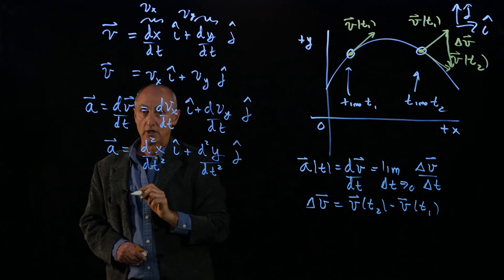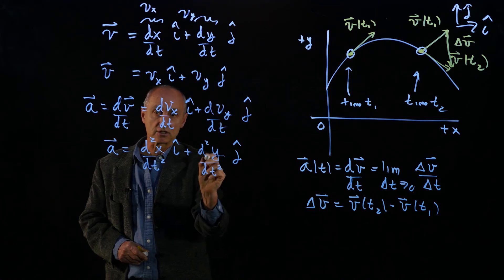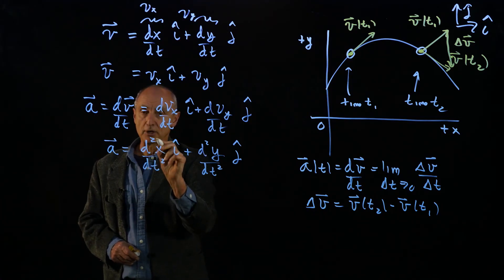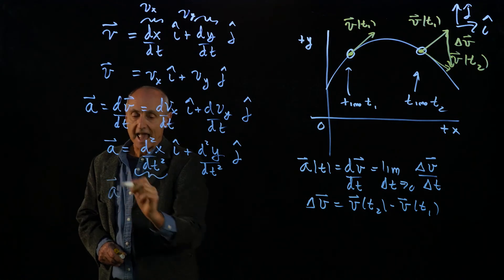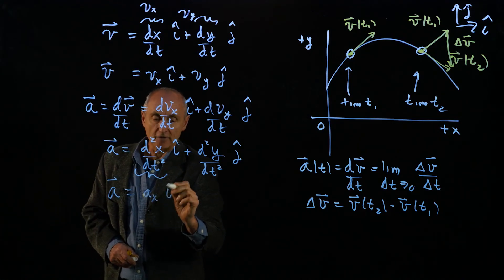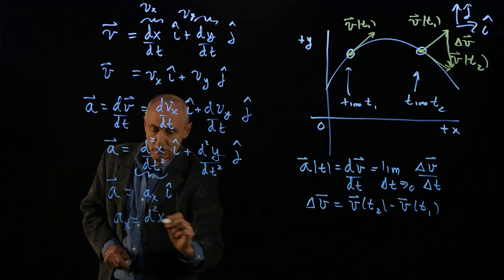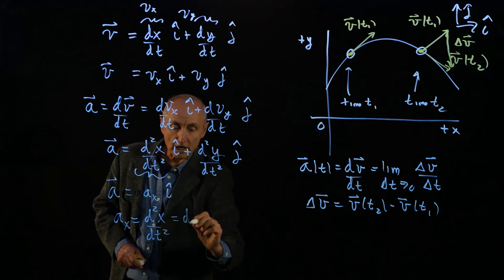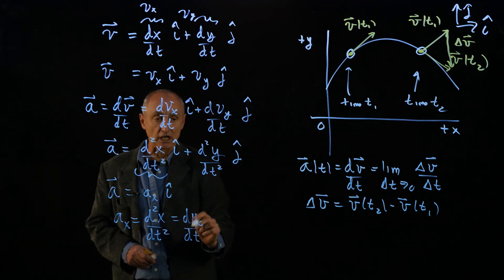And that is what we call the instantaneous acceleration. Now, again, this is sometimes awkward to draw, but you always must remember that this x-component of the acceleration, by definition, is the second derivative of the component function, or the first derivative of the component function for the velocity.